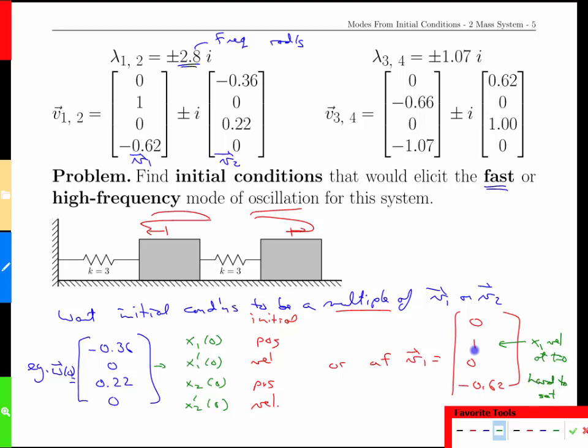This is x1's velocity at time zero and that's just hard to set. How do I push a mass exactly at one meter per second and this mass exactly at negative 0.62 meters per second? It just seems hard whereas positions we can move things with our fingers and it's all good, but both of them would elicit the same mode of vibration.